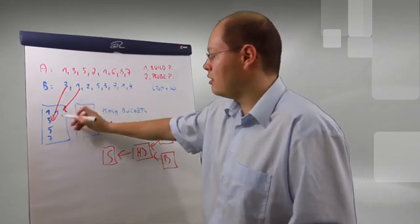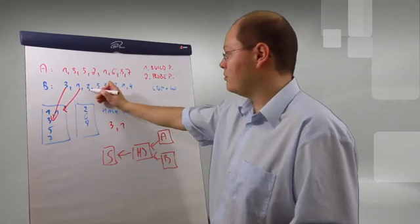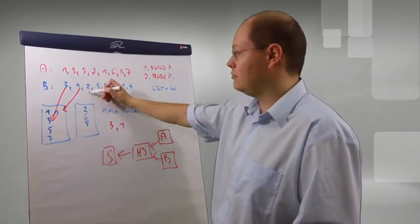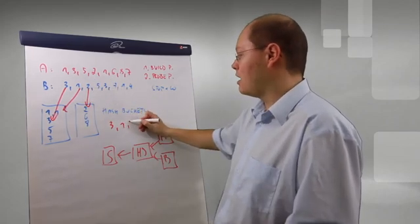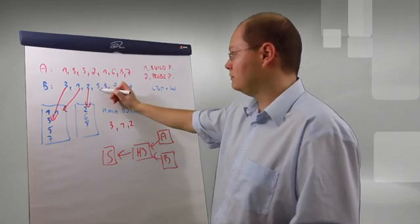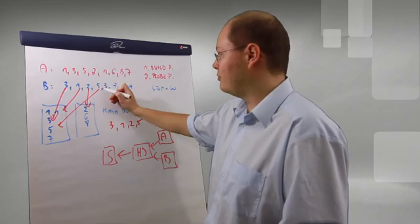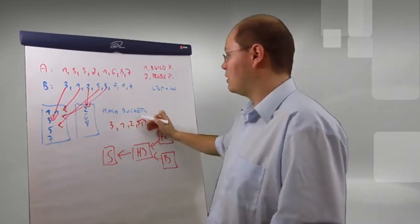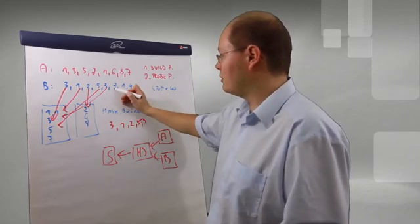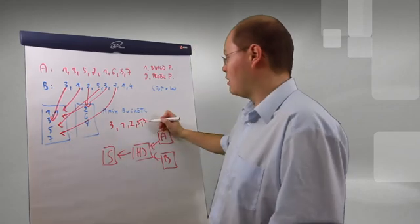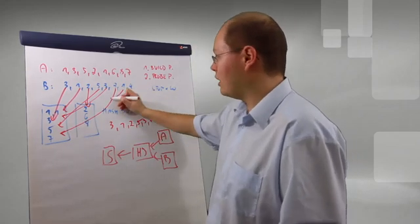Value of 1, we have a result. Value of 2, even value, we are probing the other hash bucket, emitting the value of 2. Value of 5, uneven. Value of 3, value of 7, we have also a match, value of 1.